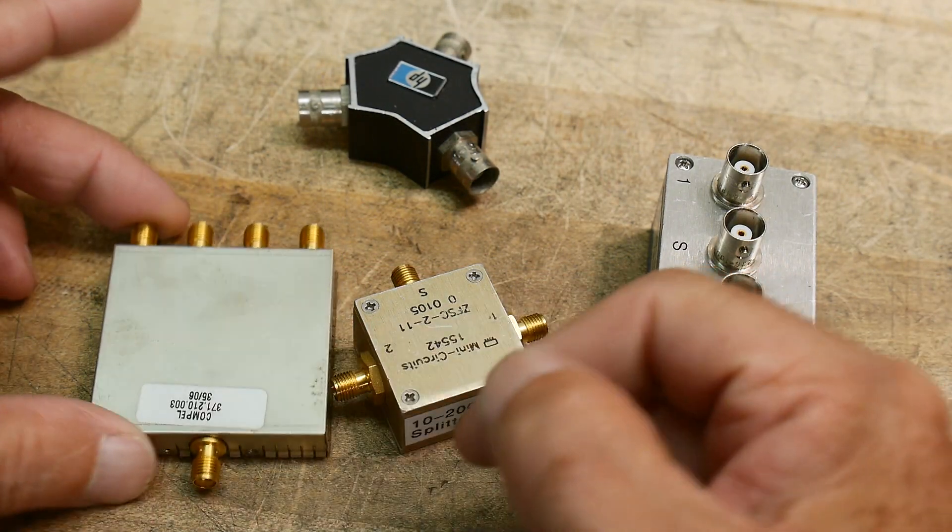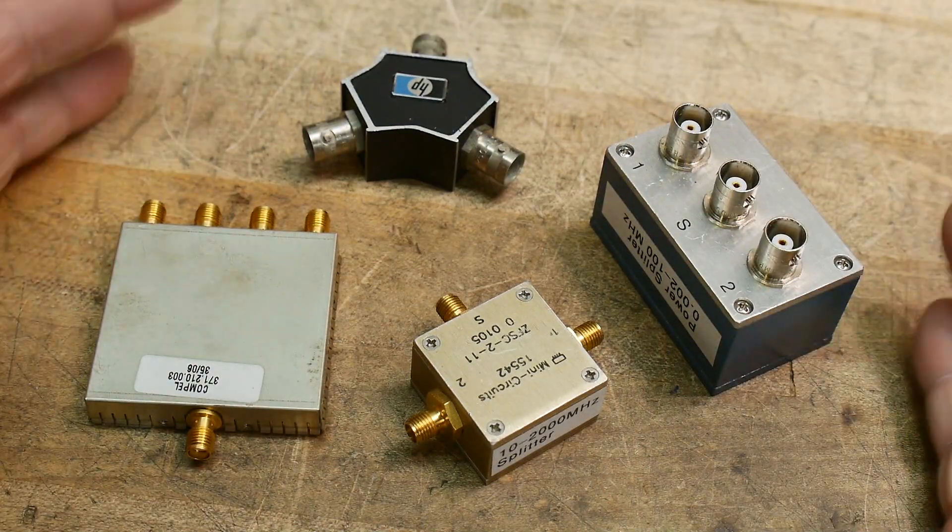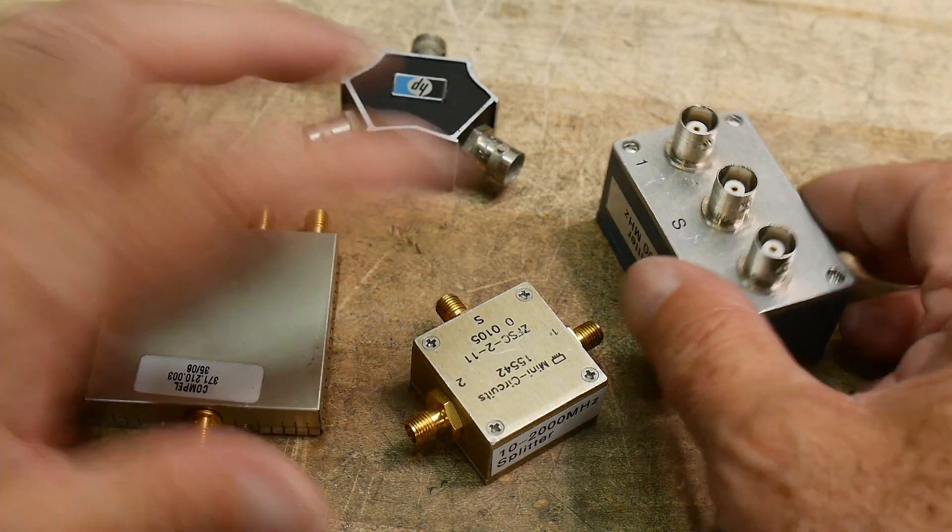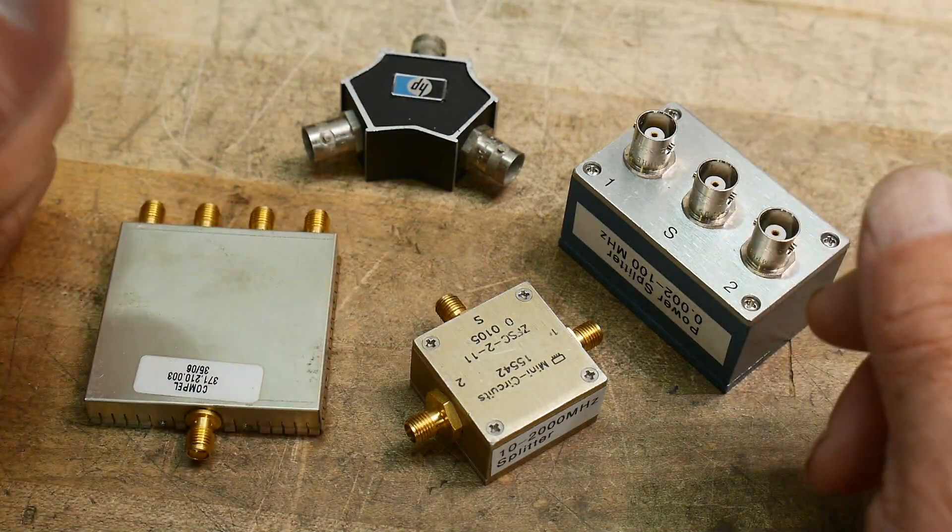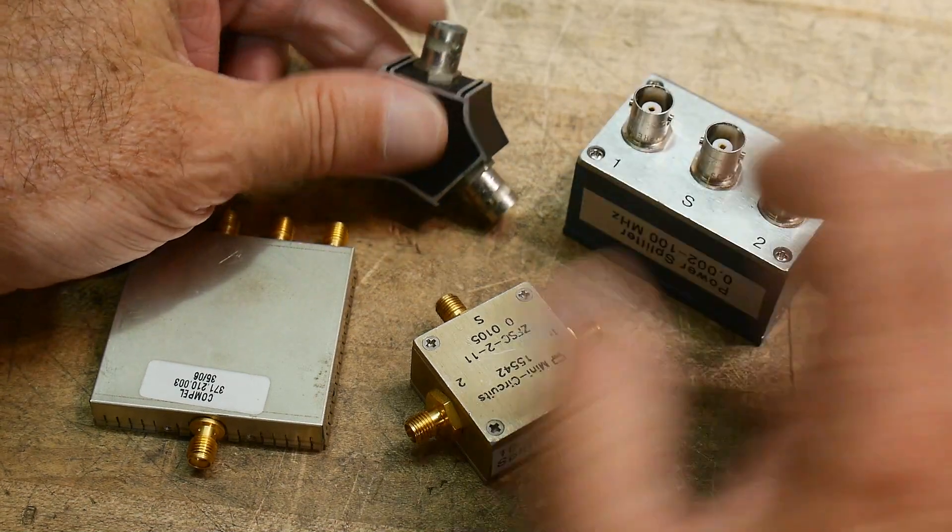So I wanted to take a look at this particular unit and these are all the same type of unit. These are all what are called splitters or couplers. You can use them to split one thing into two or take two things and combine them into one, and they come in different sizes and different connectors.